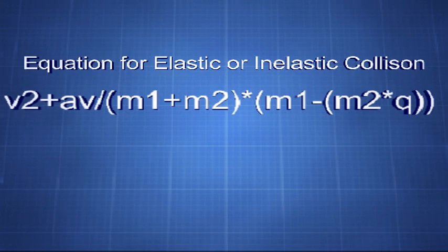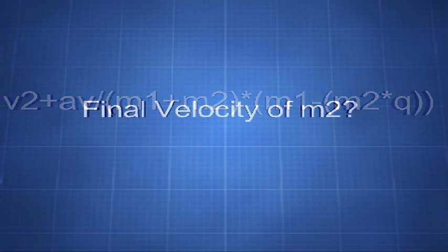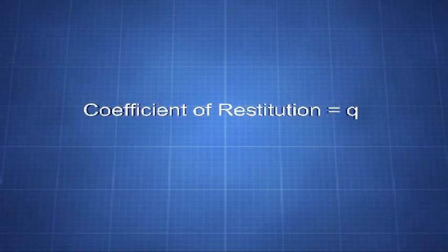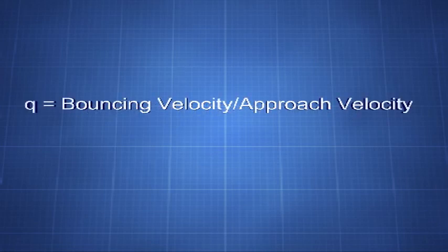And finally we have our easy equation for the final velocity of m1 in either an elastic or inelastic collision. But wait, you might be asking, what about the final velocity of m2? Well, that is even easier, it is just the remainder. We have verified that q is indeed the coefficient of restitution, which can also be determined by dividing the total bouncing speed of a collision by the total approaching speed.